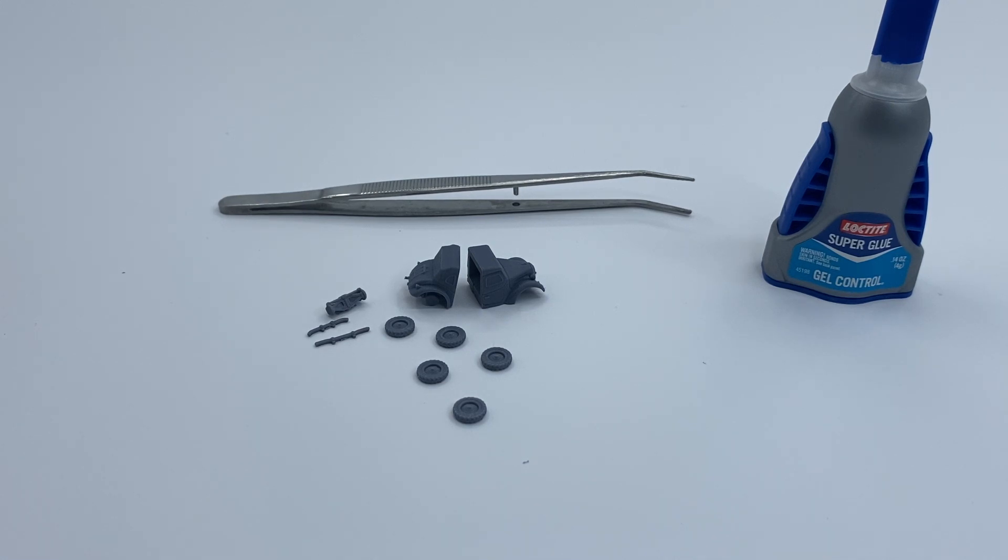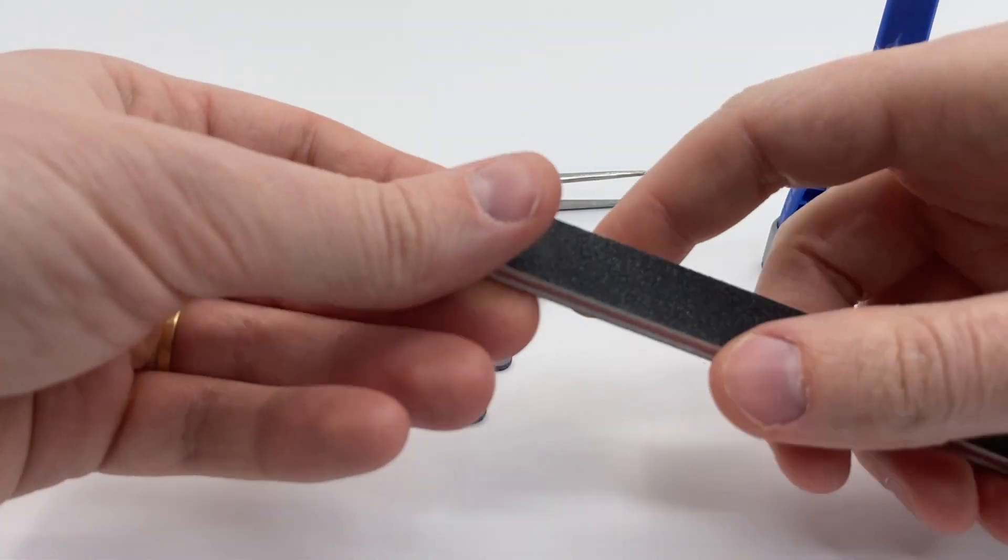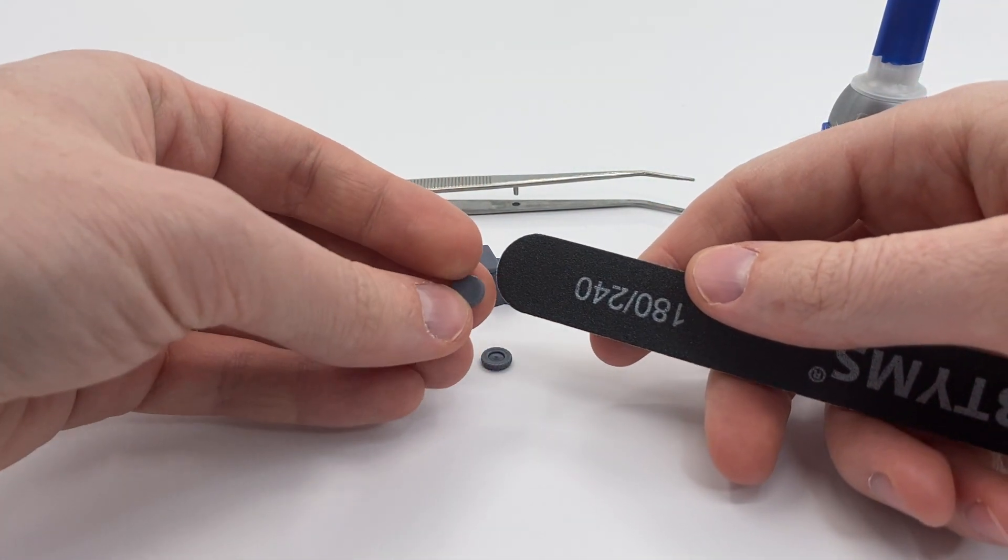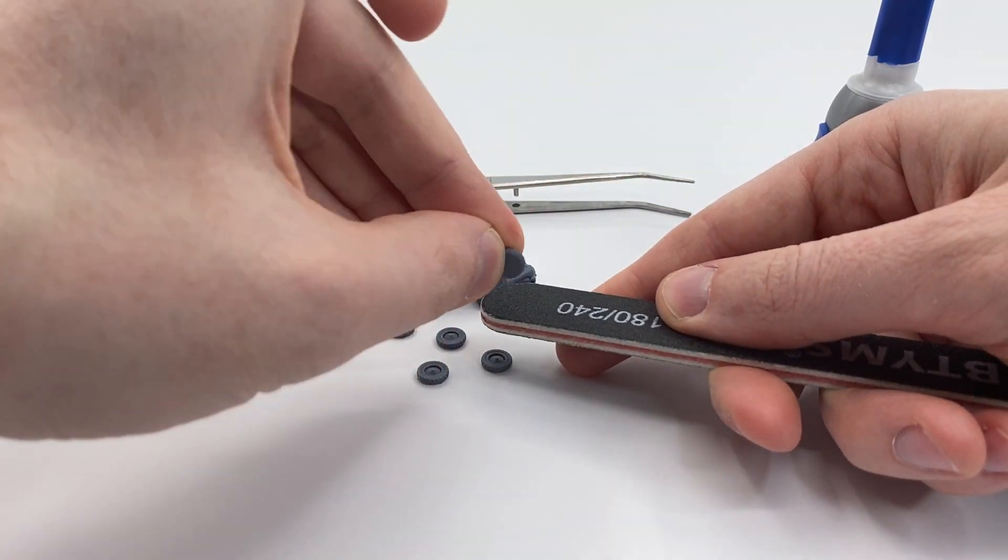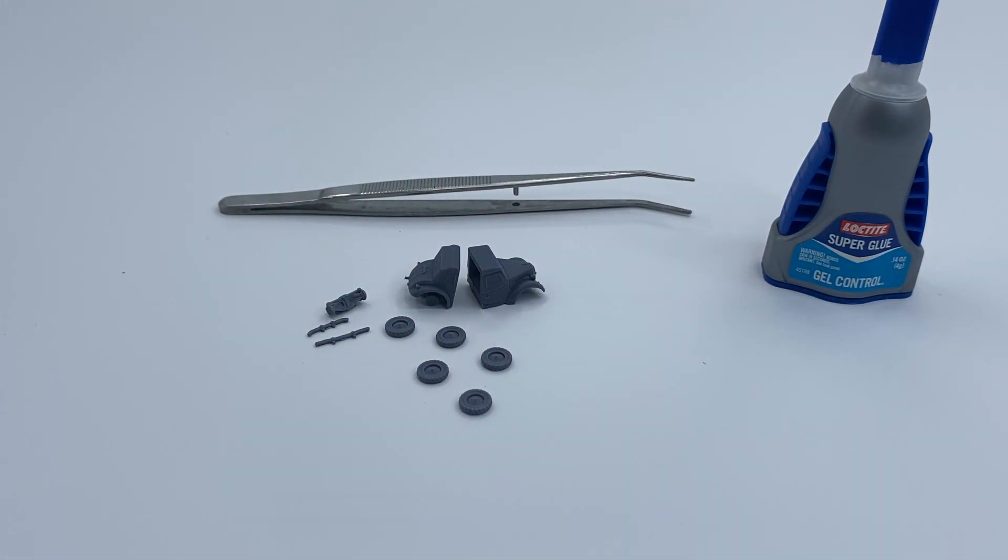So that is accomplished. Now let's clear off the surface here a bit. This is an optional step. You can take these little tires and sand down the areas that had the sprue marks.